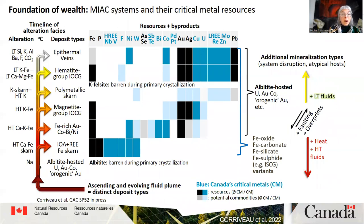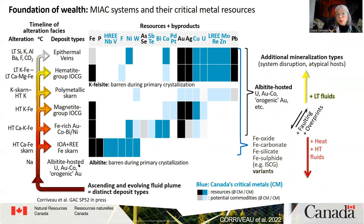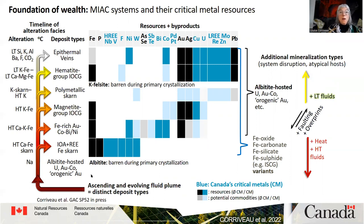Albitides are barren. However, through tectonic disruption or overprinting of any kind, if you bring in albitide and overprint it with a fertile alteration species, you can form albitite-hosted uranium or albitite-hosted gold-cobalt deposits. We know that albitide forms along regional fault zones, so if you have orogenesis and really mobilize the endowment of albitides, you can end up having orogenic gold, gold-cobalt, and orogenic uranium — all sorts of so-called orogenic mineralization within your albitide corridors.